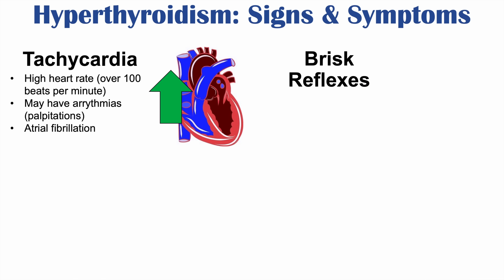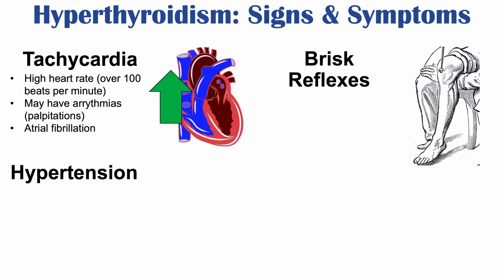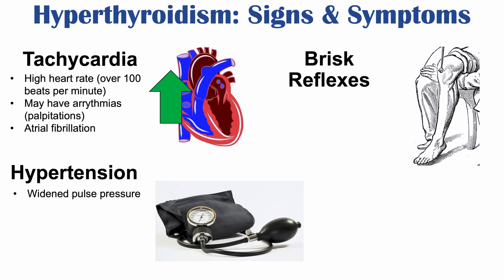Brisk reflexes are another physical sign found in hyperthyroidism patients. Hypertension can also occur — more specifically, a widened pulse pressure, which is the difference between systolic and diastolic blood pressure. In hyperthyroidism, the systolic pressure increases while the diastolic really doesn't change, causing a widened pulse pressure. This is an important finding to note.